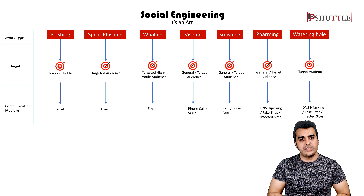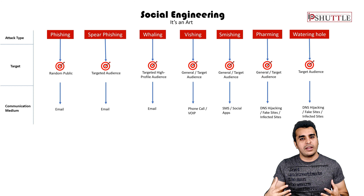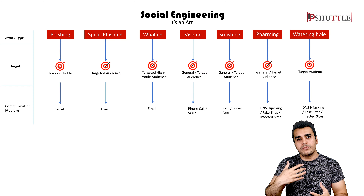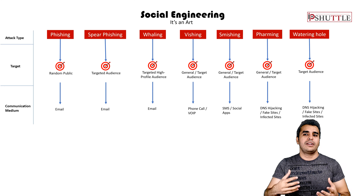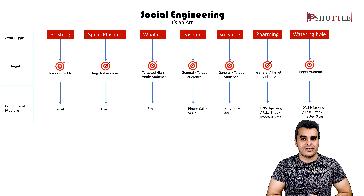This is the way social engineering happens. You can look into someone's friend list, pretend to be one of them, and many people will fall for it because they trust that person and are expecting messages from them. Once you pretend to be someone they know, they will reply — this is a core part of social engineering.